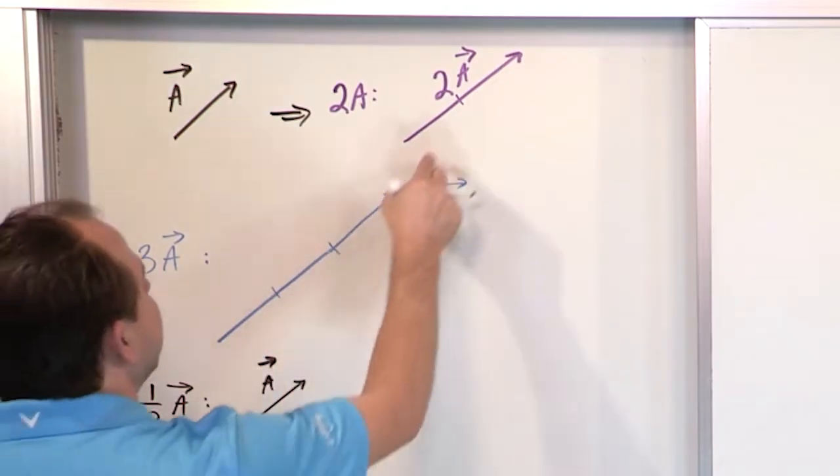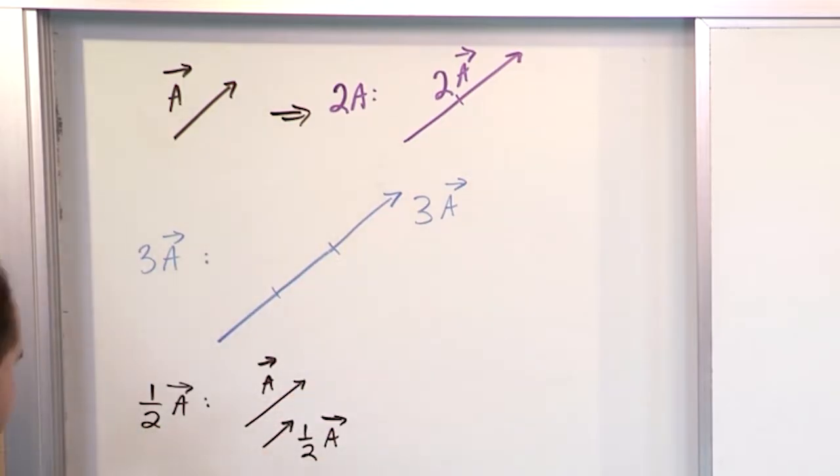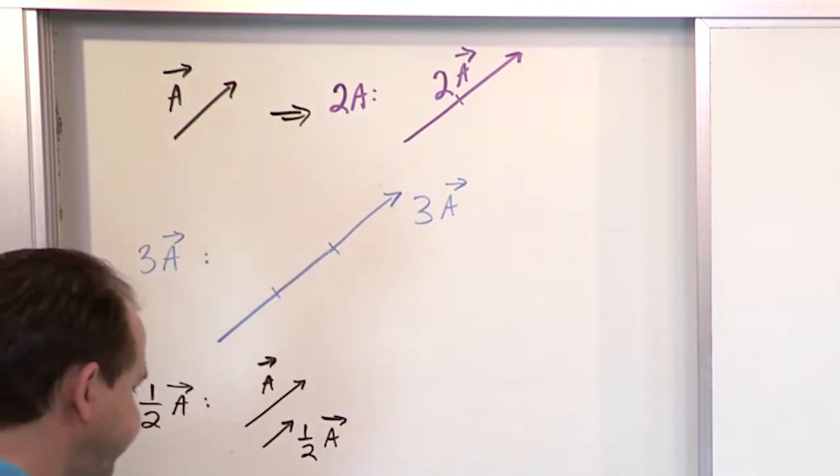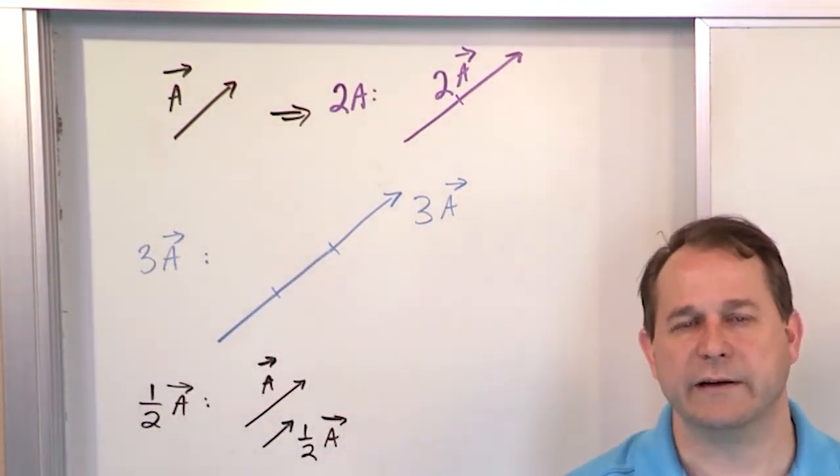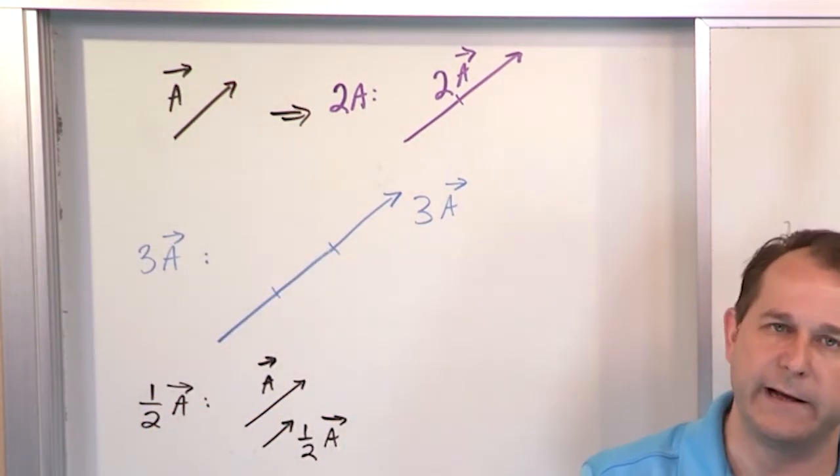So you see how in every case, the direction is the same. That doesn't change. So multiplying a vector by a scalar is trivial. It's literally just stretching the arrow or shrinking it.